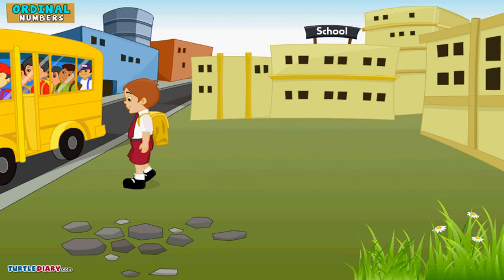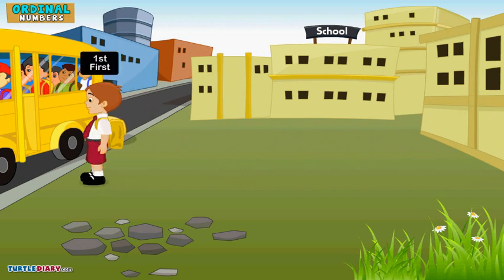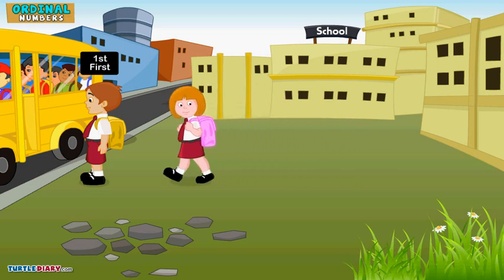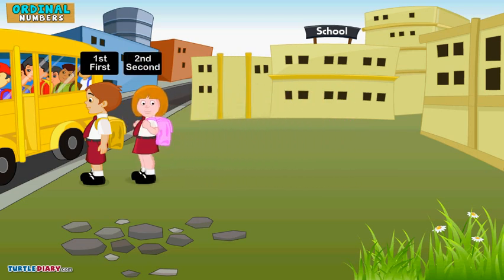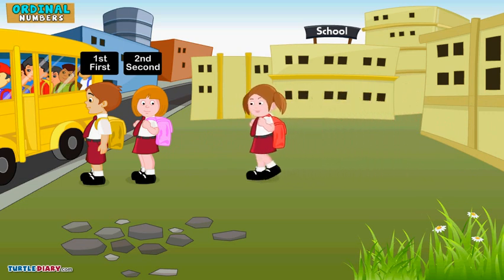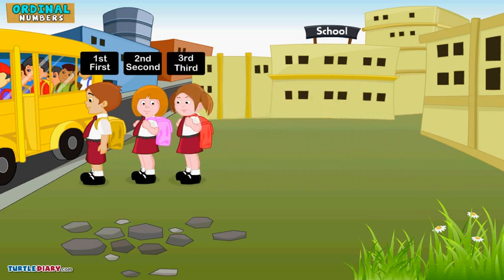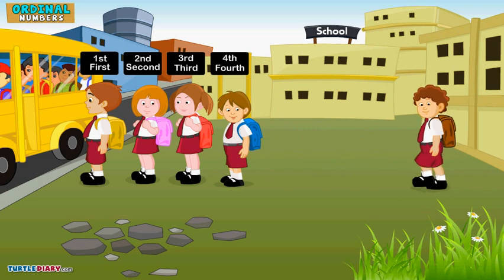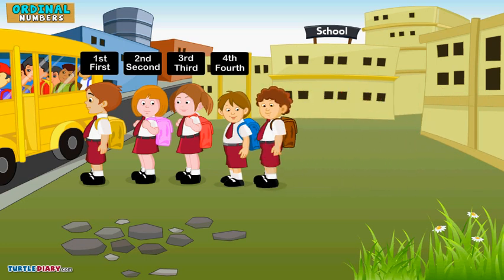The boy with the yellow bag is in the first position. The girl with the pink bag is in the second position. The girl with the red bag is in the third position. The boy with the blue bag is in the fourth position. The boy with the brown bag is in the fifth position.